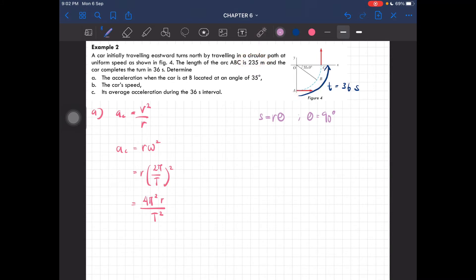So s is 235 meters. The theta should be in radians, so 90 degrees is π/2 radians. Therefore, r = s/θ, and you should get the radius equal to 150 meters.